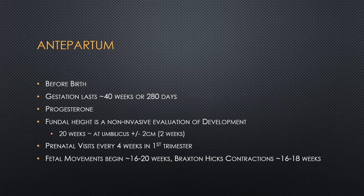Prenatal visits are going to happen about every four weeks in the first and second trimester. They can be about every two to three weeks in the second trimester, and then in the last month of development, it's going to be every week. Just remember that in those first one to two trimesters, they're going to be about every four weeks.